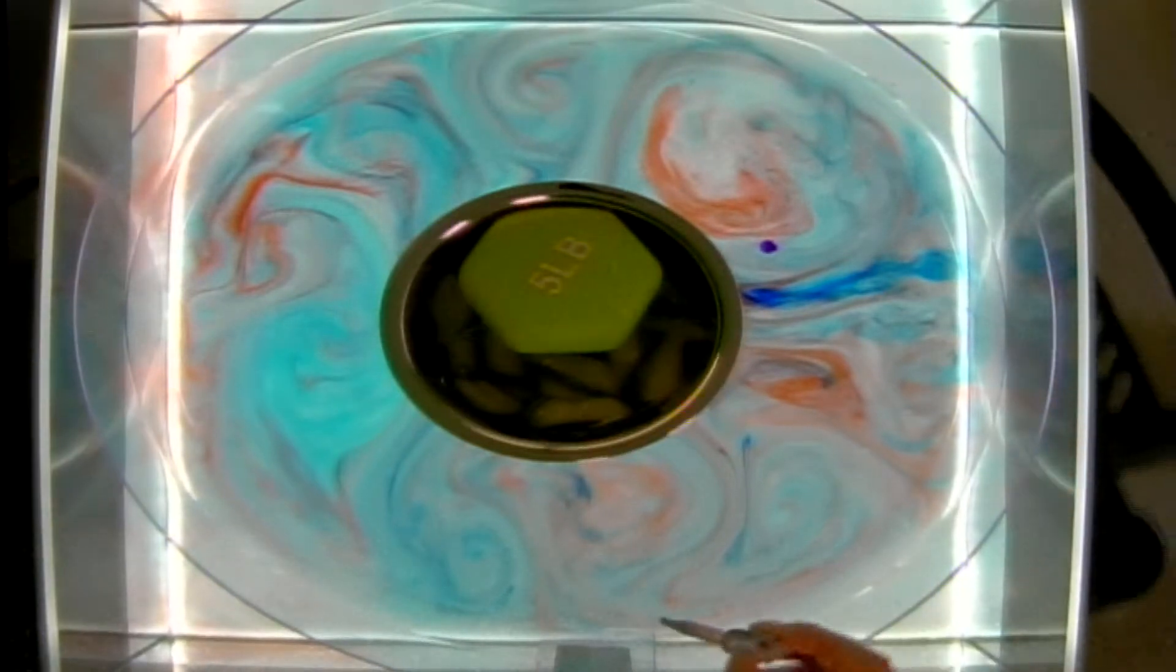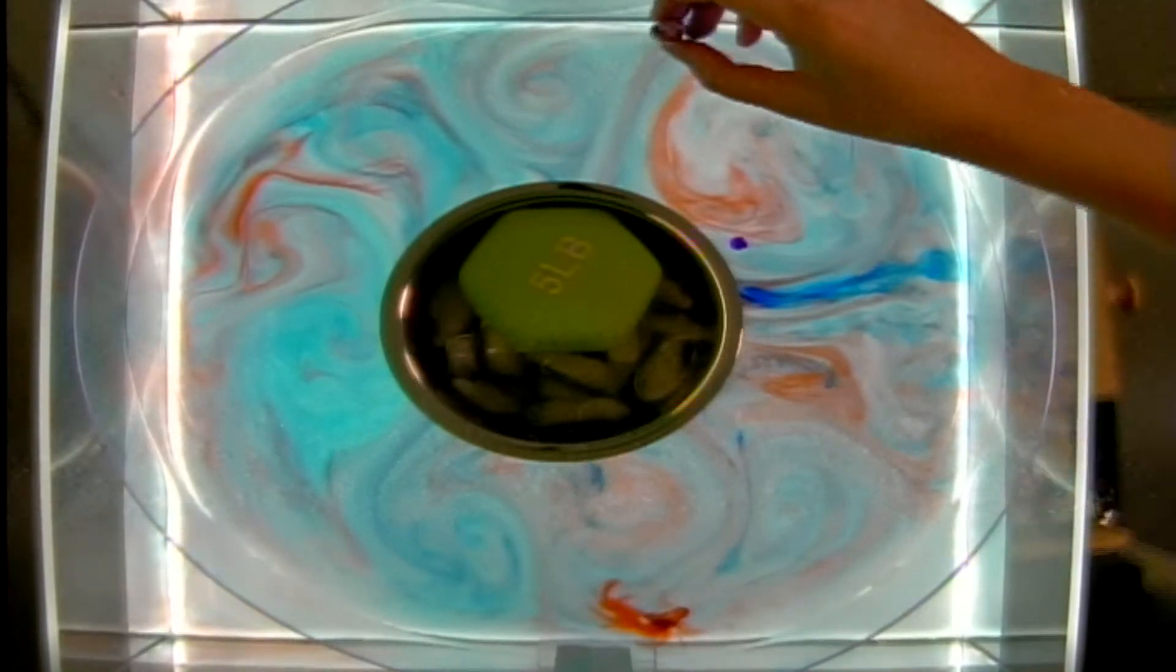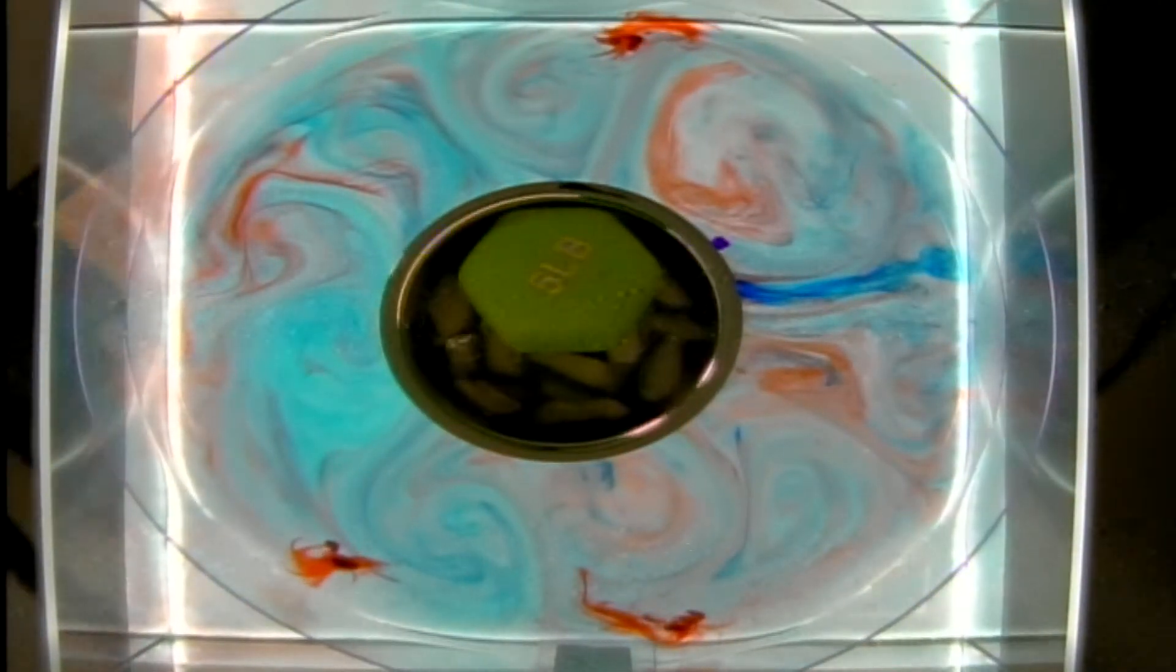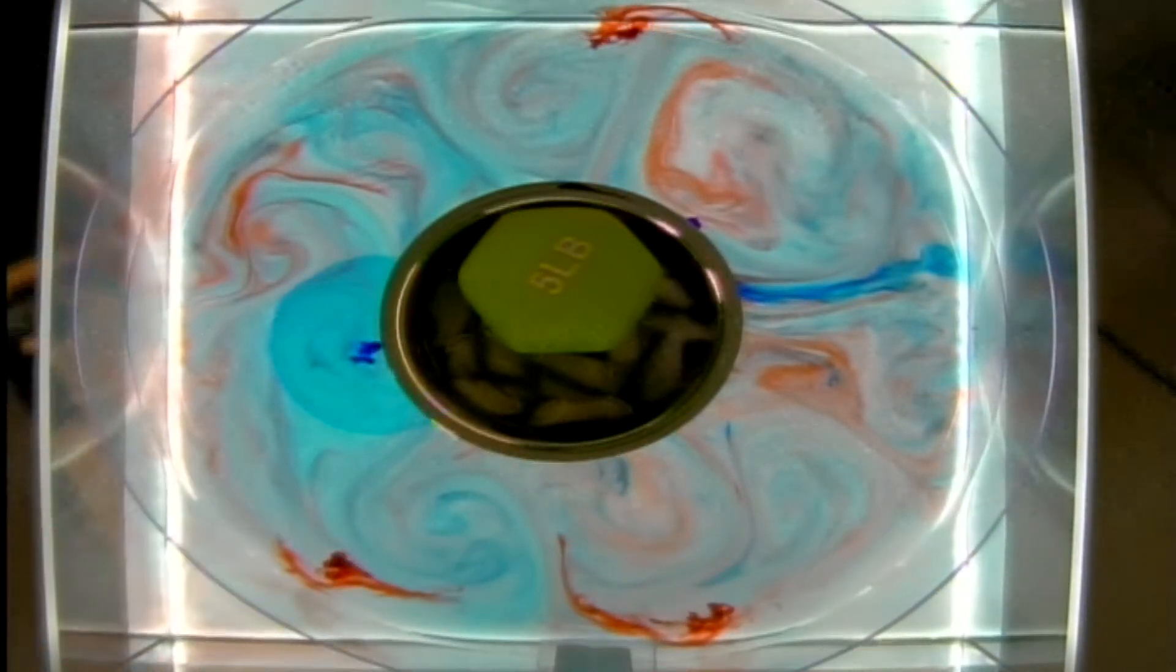Those temperature gradients act like potential vorticity gradients and so they allow what are called Edie edge waves to live on them and propagate like Rossby waves. And those Rossby waves give us our weather systems.